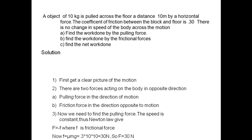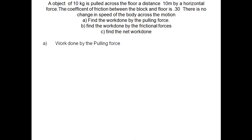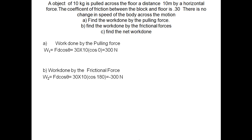Now that we know the forces, let's calculate the work done. Work done by the pulling force: W1 = Fd cosθ. Since force and motion are in the same direction, θ = 0°, giving W1 = 300 J. Work done by friction: W2 = Fd cos180° = −300 J, since friction opposes motion. The net work done is W = W1 + W2 = 300 − 300 = 0. Note that the net work on the object is zero, but the pulling force did 300 J of work on the body.